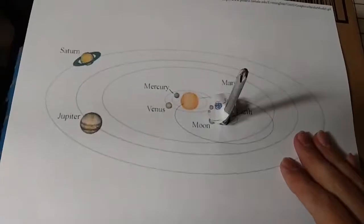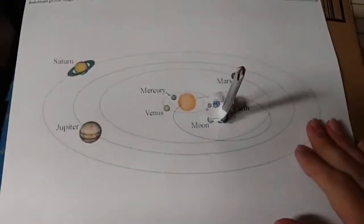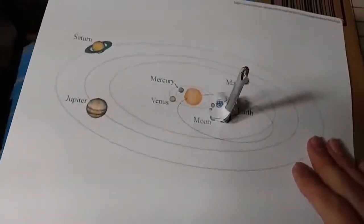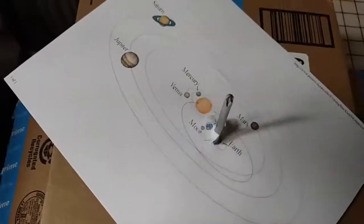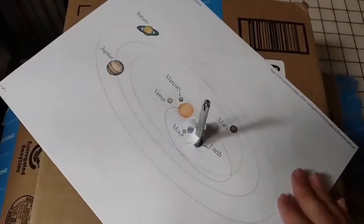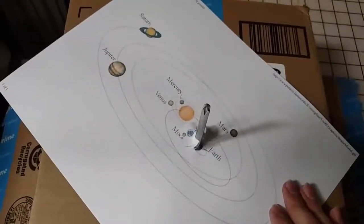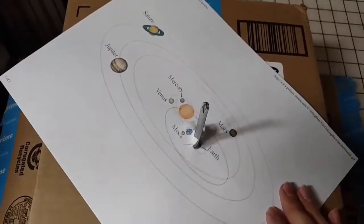Because the problem with the Tychonic system is it doesn't quite explain how the planets themselves move around every night, because they do. If you watch the sky, you'll see Jupiter moving around every day. So how do you explain it?